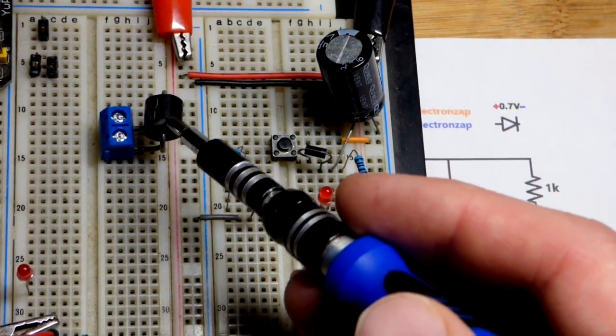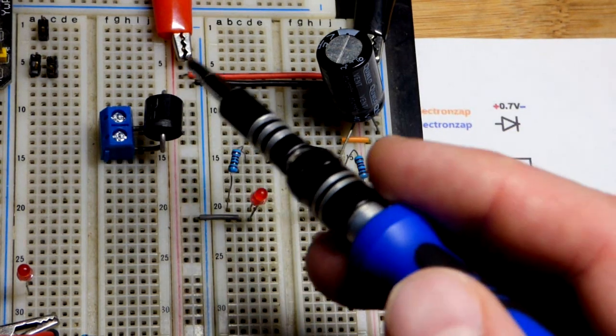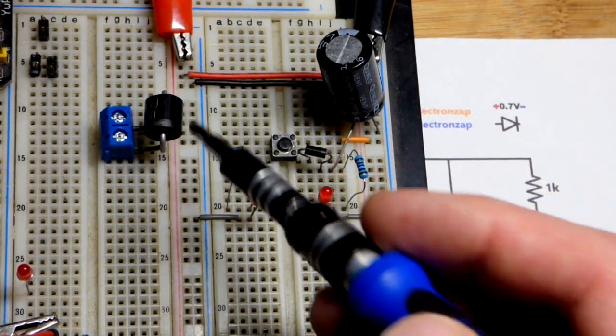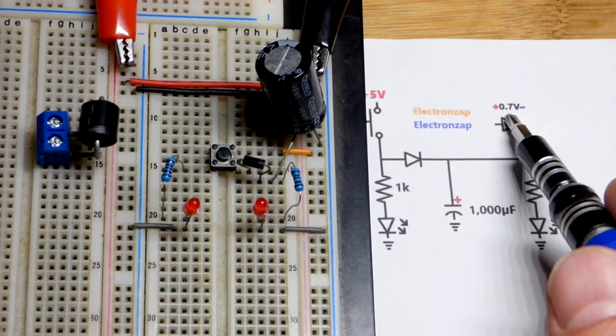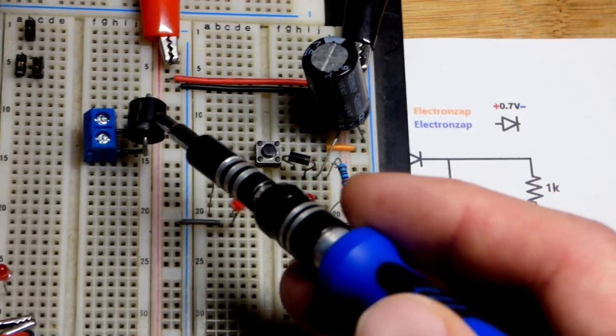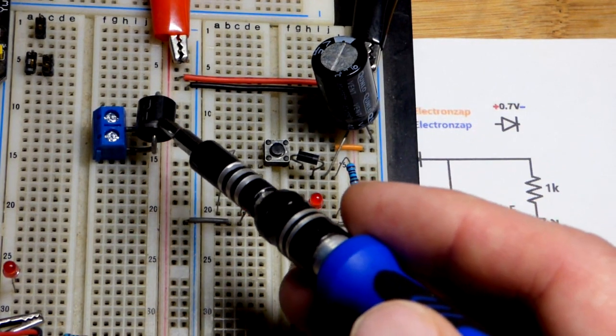This is not a rectifier diode though. This is a Schottky diode. So if that 0.7 volts is a little bit too much of a drop, you can use a Schottky diode which will drop probably in the range of like half of that.